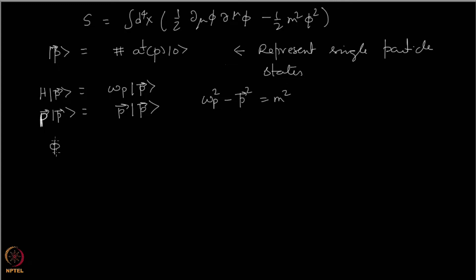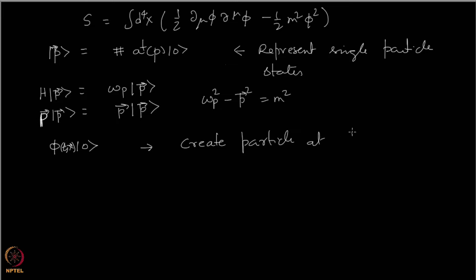We had also learned that you can take the vacuum — the ground state of this theory — and if you act on it with the operator phi, you create a particle at position x at time t. So phi acting on the vacuum creates a single particle at time t at position x. That is what the interpretation was.